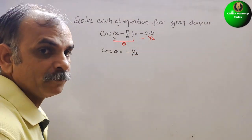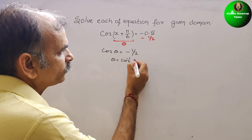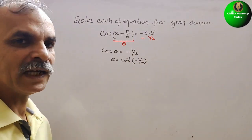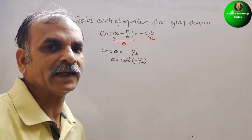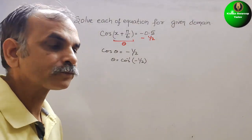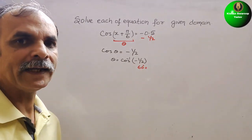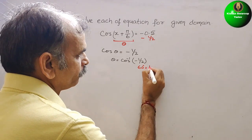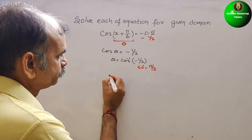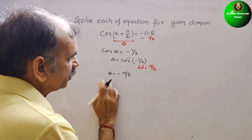So now what is your theta? Theta is cos inverse of -1/2. We know in our table cos 1/2 stands where? 1/2 stands at 60 degrees. That is 60 degrees, how we are writing in radians? π/3. So now theta is -π/3. This is your theta now.